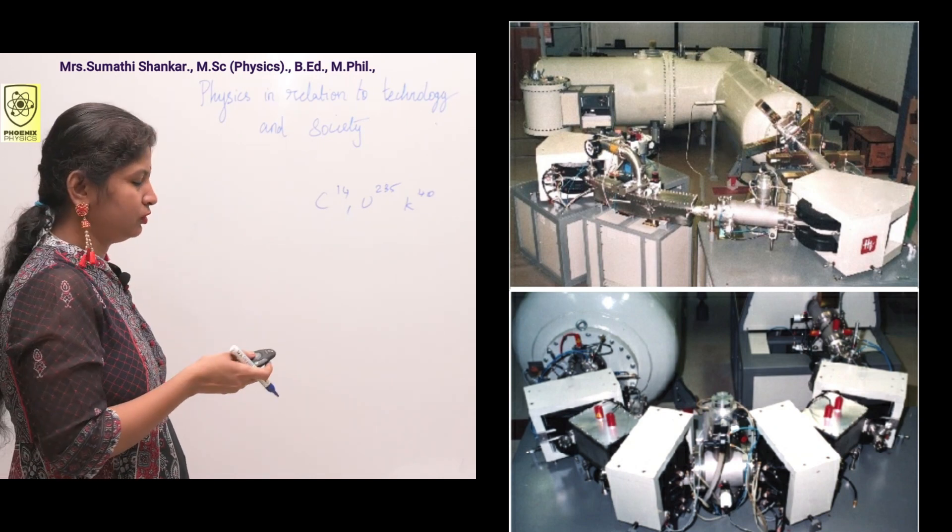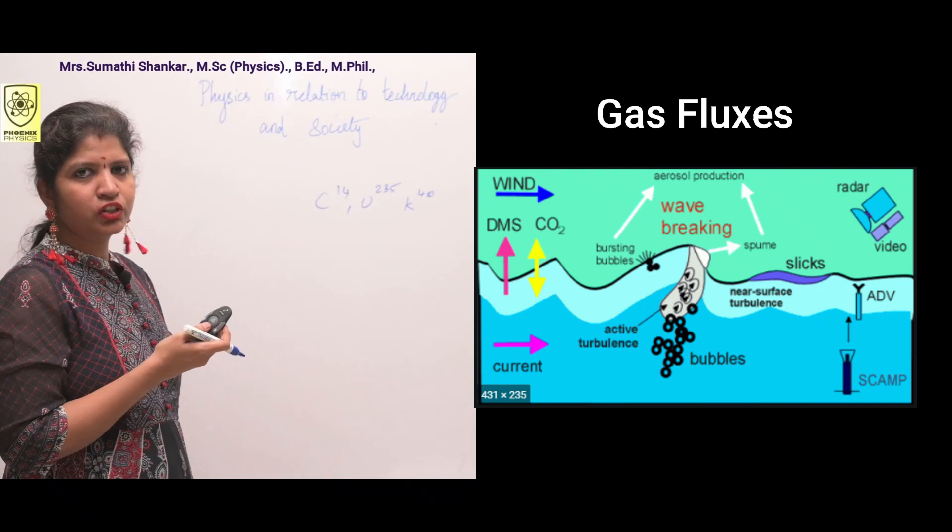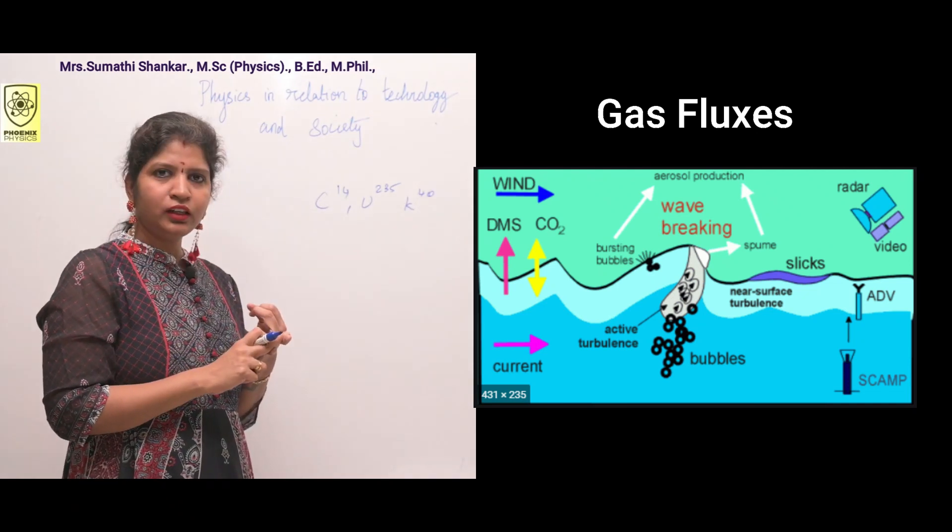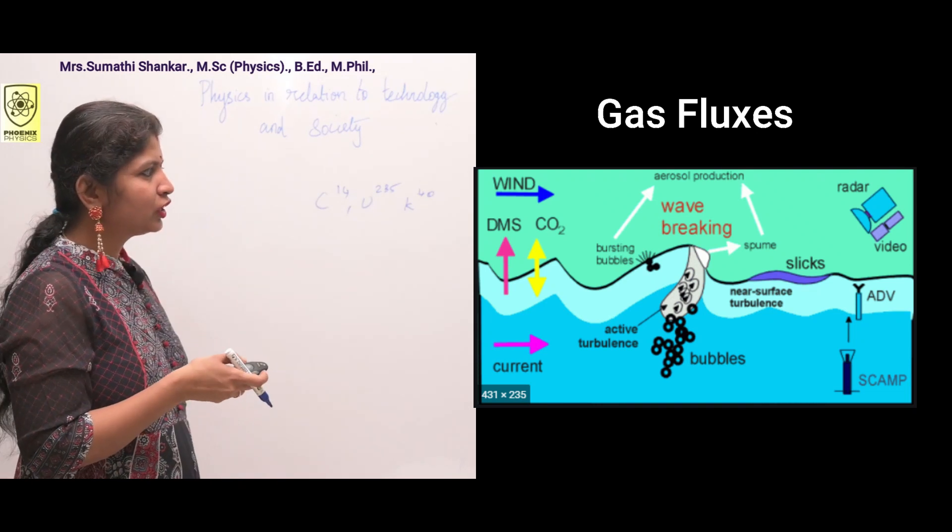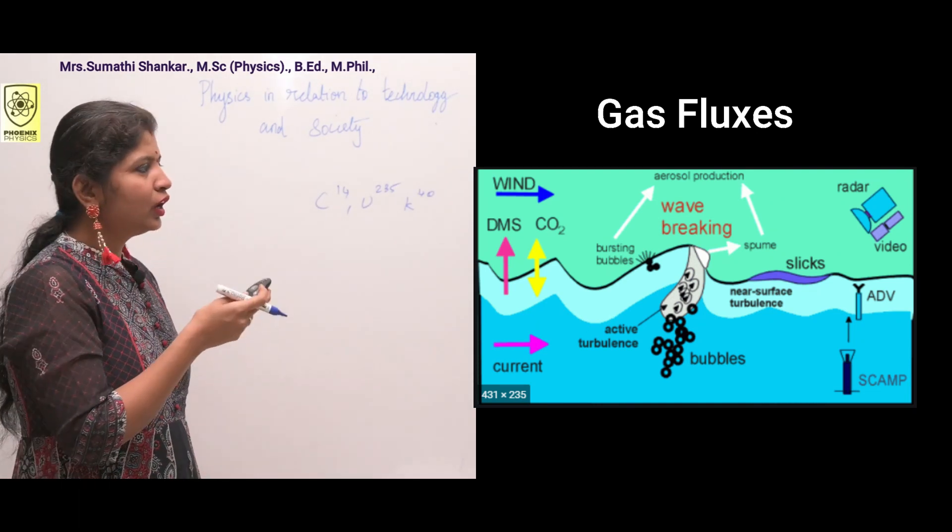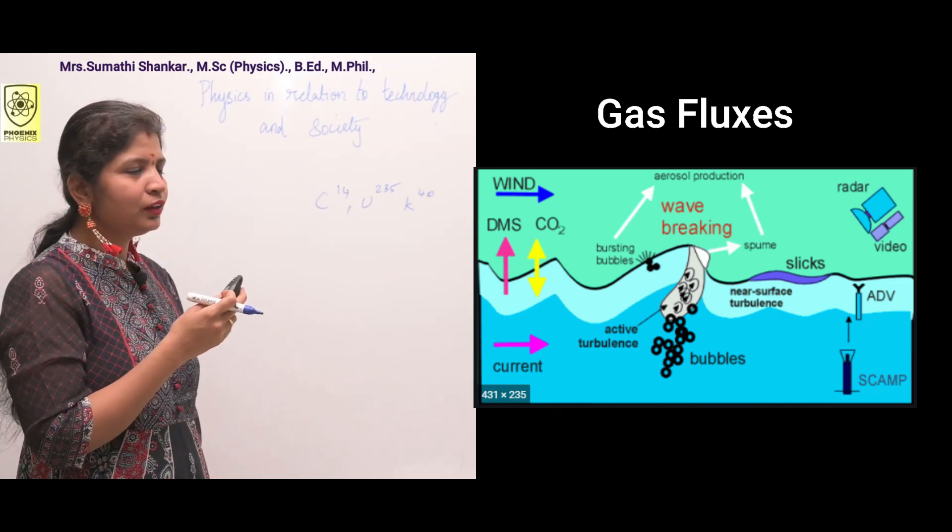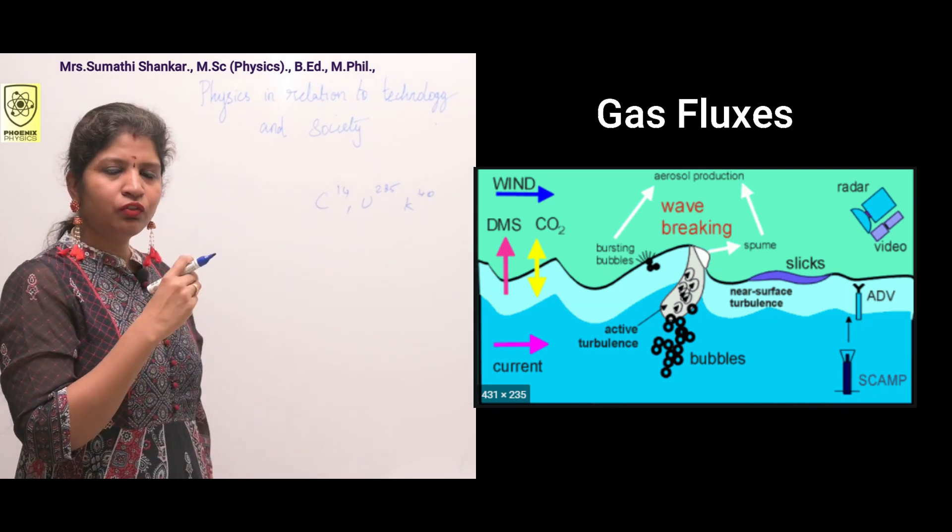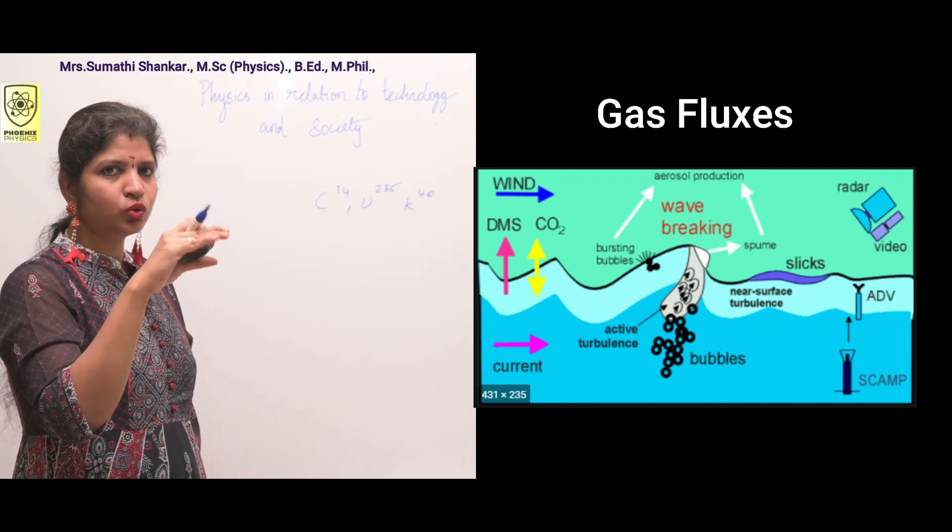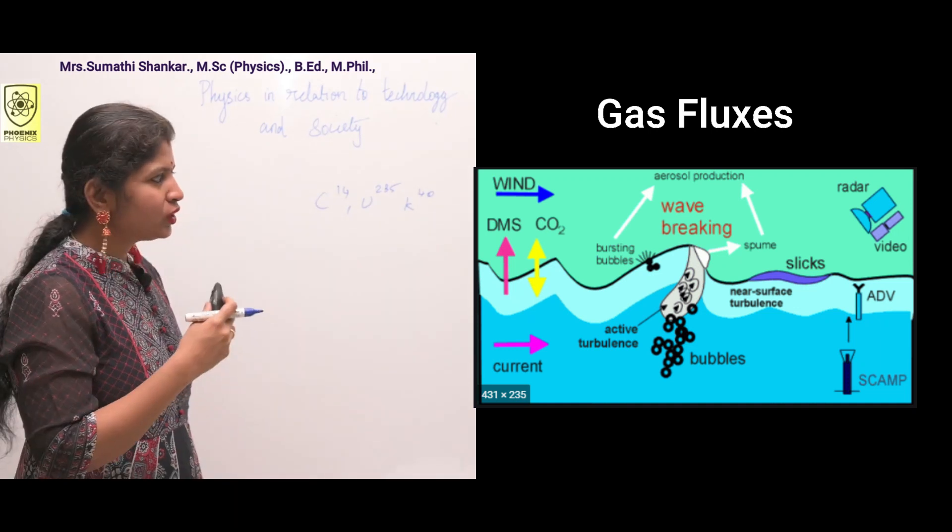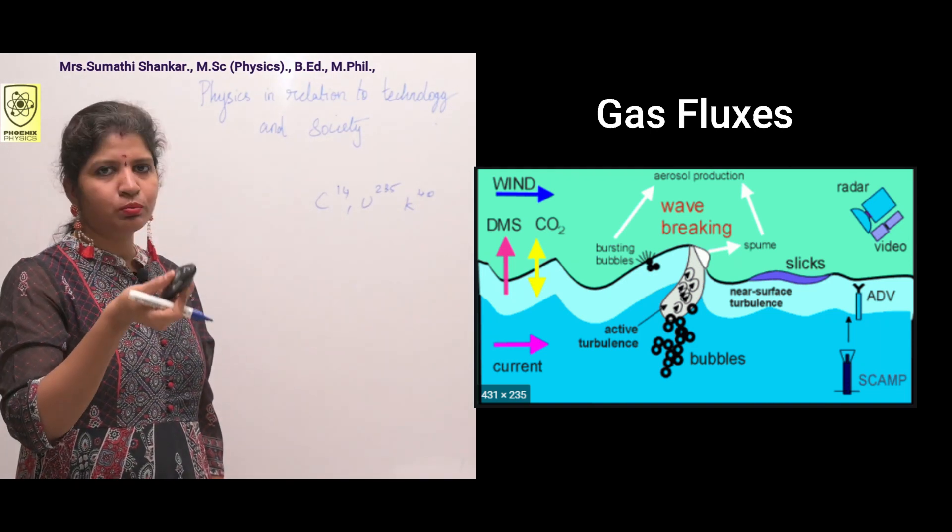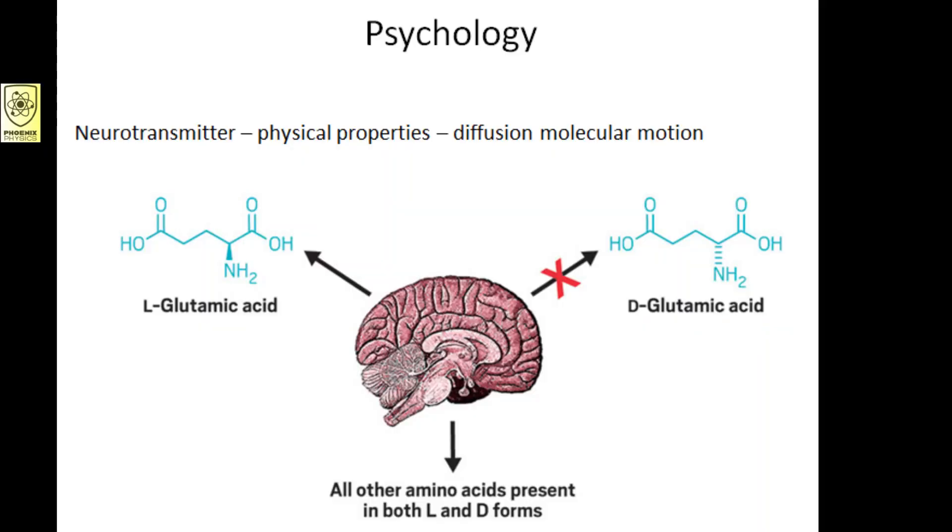Physics in relation to oceanography. The physics parameters are temperature, salinity, gas flux, and current speed. Salinity is the amount of dissolved salt in water. Current speed is the flow of water from one location to another. Gas fluxes - what are gas fluxes? The flow of volatile gas emission from ocean to atmosphere is gas fluxes.